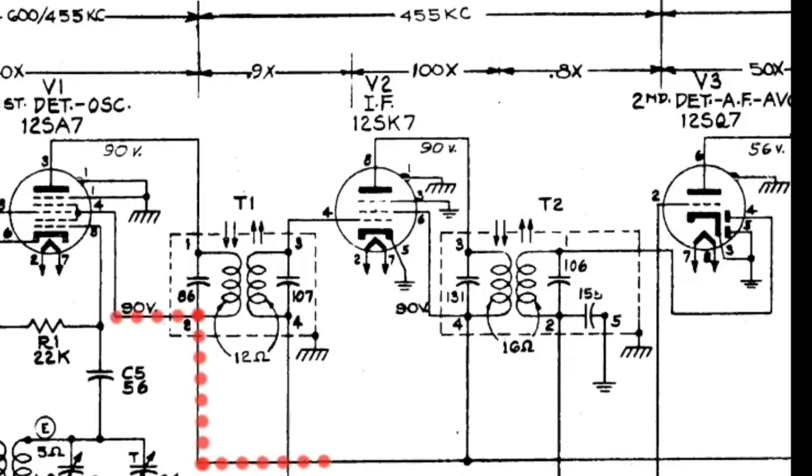We discussed the B plus earlier, but you can see here I'm just kind of redrawing it. You can see it coming across and making its way up to the screen grid pin number 4 there on the 12SA7. You also see that it connects to the T1 IF transformer. The B plus would continue to route through that primary side of the transformer and make its way back over here to the plate itself of the 12SA7, pin number 3. So should the primary here open, that would not allow the B plus voltage to make its way back to the plate itself.